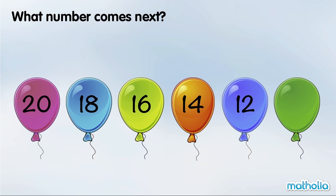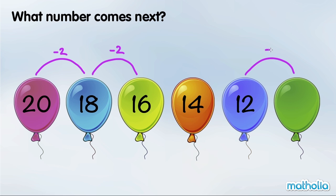What number comes next? 20, minus 2, is 18. 18, minus 2, is 16. The numbers are going down by 2 in each step. 12, minus 2, is 10. The next number is 10.